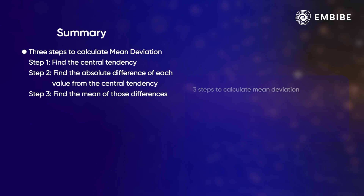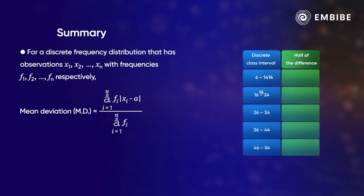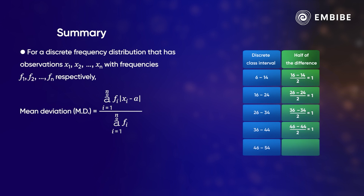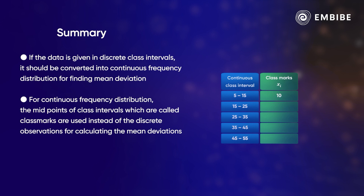Let us summarize what we have learned. The mean deviation of any set of data is calculated in three steps: find the central tendency, find the absolute differences of each observation from that central tendency, and find the mean of those differences. For a discrete frequency distribution with observations x₁ to xₙ and frequencies f₁ to fₙ, the mean deviation about central tendency a is: Σfᵢ|xᵢ − a| / Σfᵢ. If data is given in discrete class intervals, it must first be converted into a continuous frequency distribution.